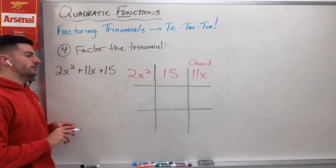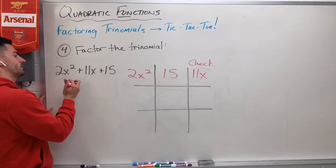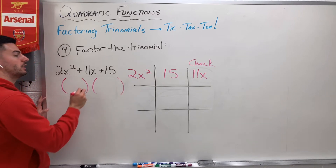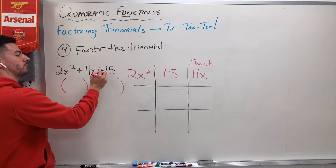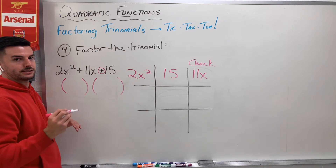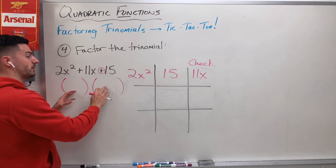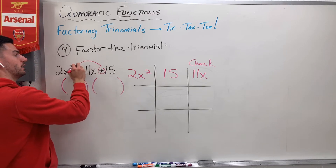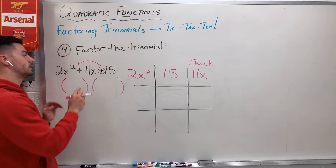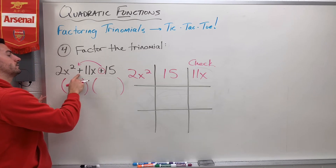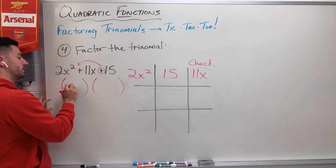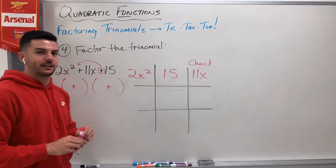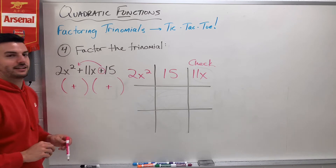Now that I filled in across the top, I look at my signs — I'm trying to figure out what are the signs going to be in my two binomial groups? I look at my C sign first, this plus. A plus tells me that both signs in the groups are going to be the same. And I look at the first sign of plus and that tells me these are going to be both pluses. So everything's going to be positive, just like in life — be positive, just like example four.